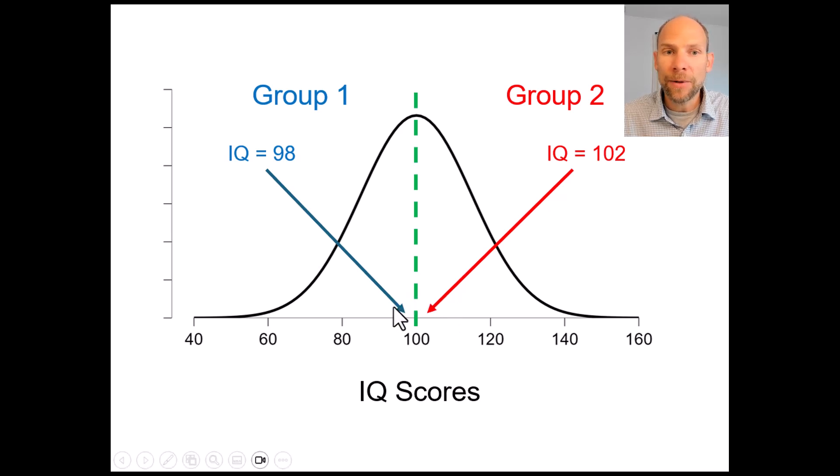between 98 and 102 there are only four IQ points whereas for example between a score of 102 and a score of 138 we have a lot more of a distance there are a lot more differences.